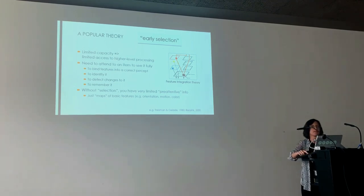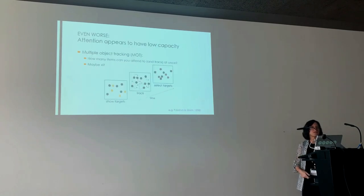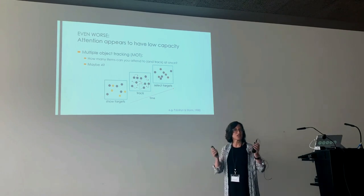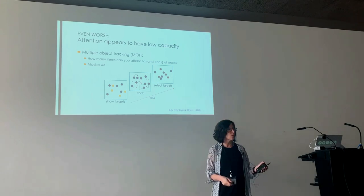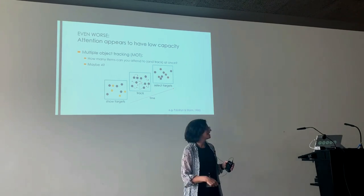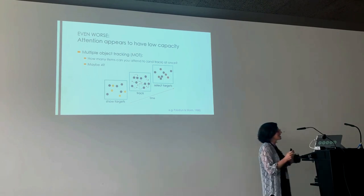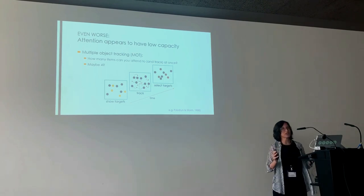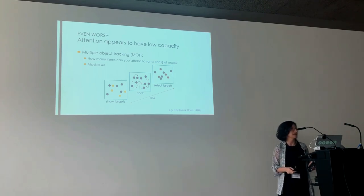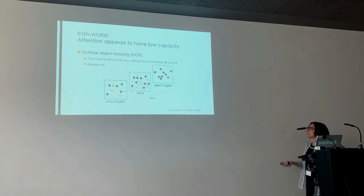This is known as early selection — the idea that you don't get much processing before attention selects something and sends it through. So if that's what's going on, it suggests that vision is really quite poor without attention.